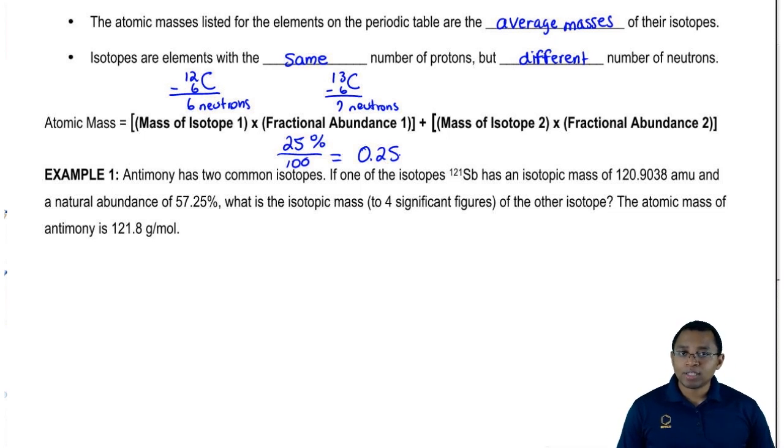Then we're going to say plus the mass of isotope 2 times its fractional abundance. The mass here that we usually have are either in grams over moles or AMU, atomic mass units. That's what we mean by mass here.